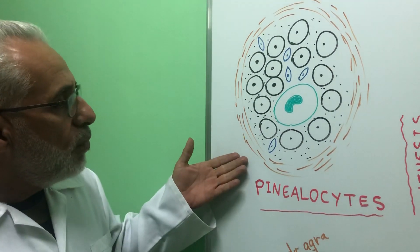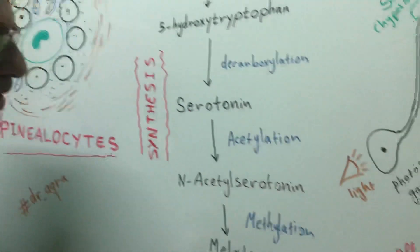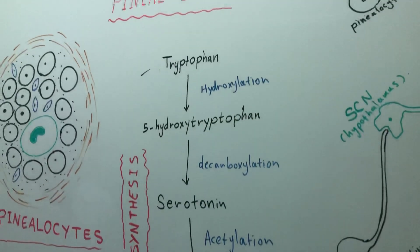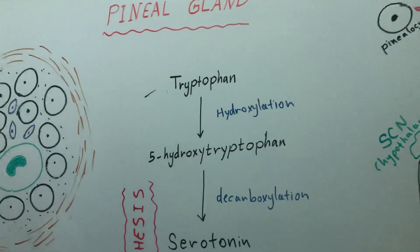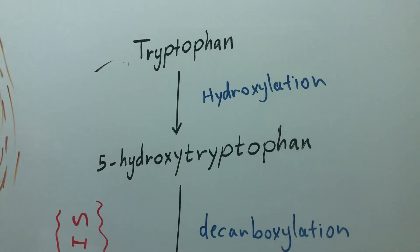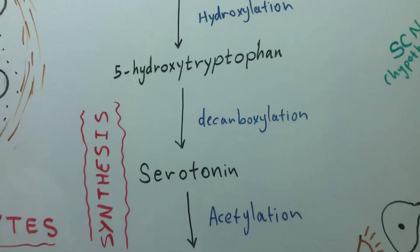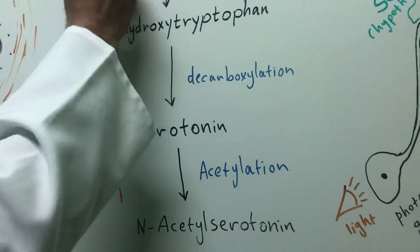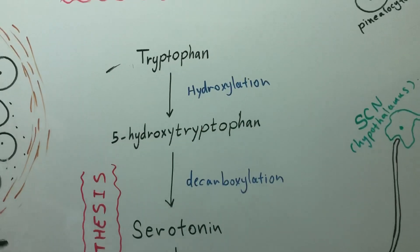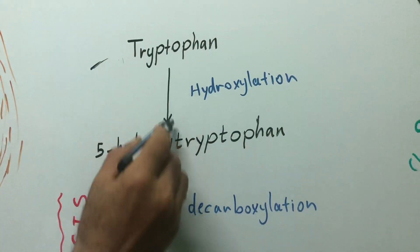The major hormone of the pineal gland, which is melatonin, is derived from the amino acid tryptophan. As a classification of hormones discussed during the previous lecture, it is a monoamine hormone because it is a derivative of an aromatic amino acid, which is tryptophan. The synthesis of melatonin in the pineal gland by the pinealocytes occurs through different steps.